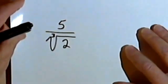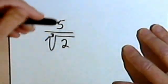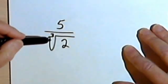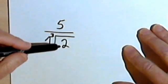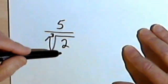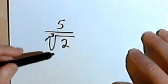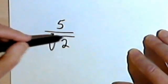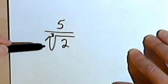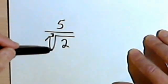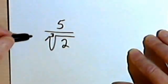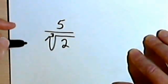Here's a little challenge problem. Let's say you have 5 over the cubed root of 2. How can you rationalize the denominator — in other words, how can we get rid of that radical sign in the denominator? I'll leave this as a problem for you to work out yourself.